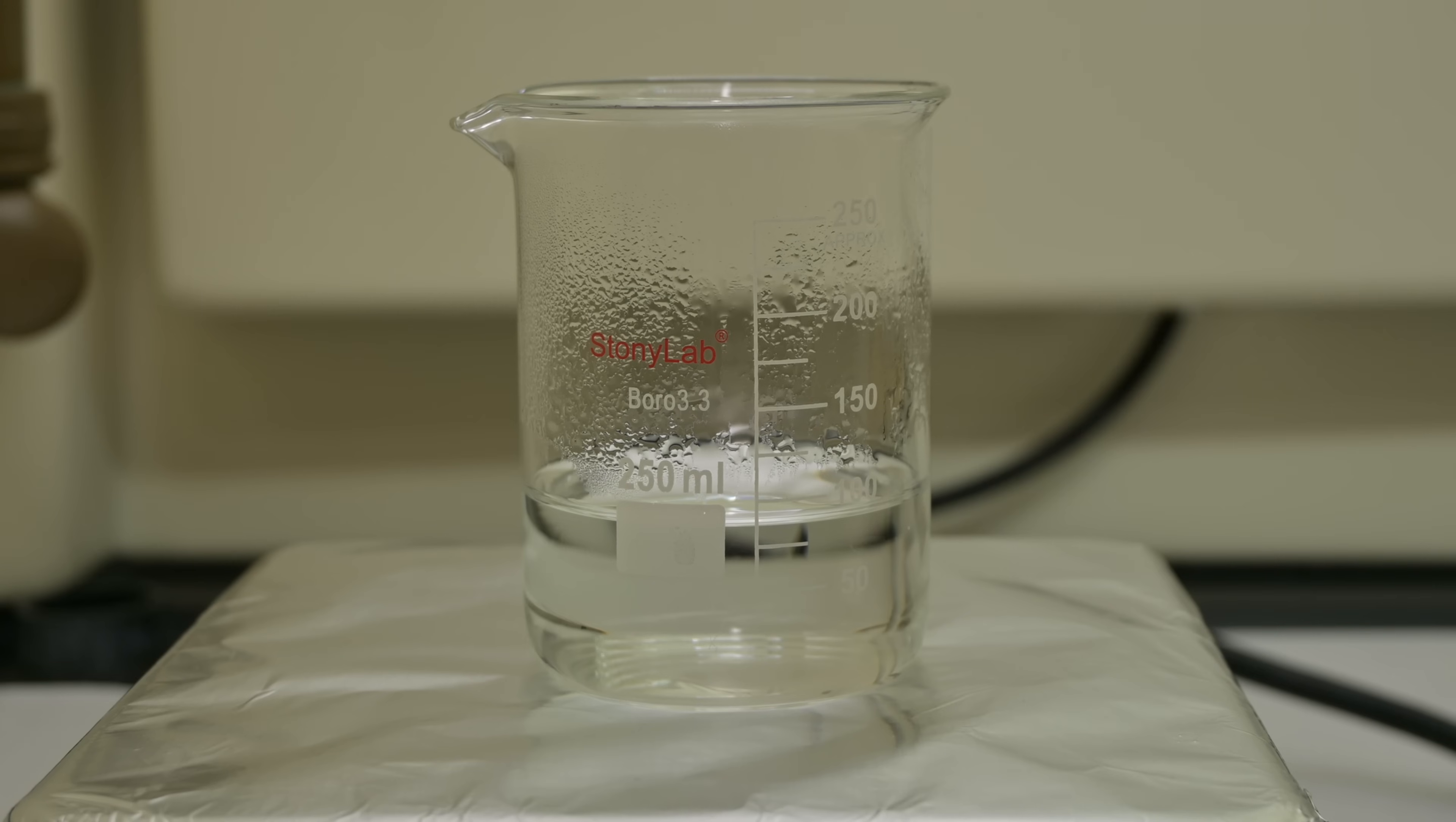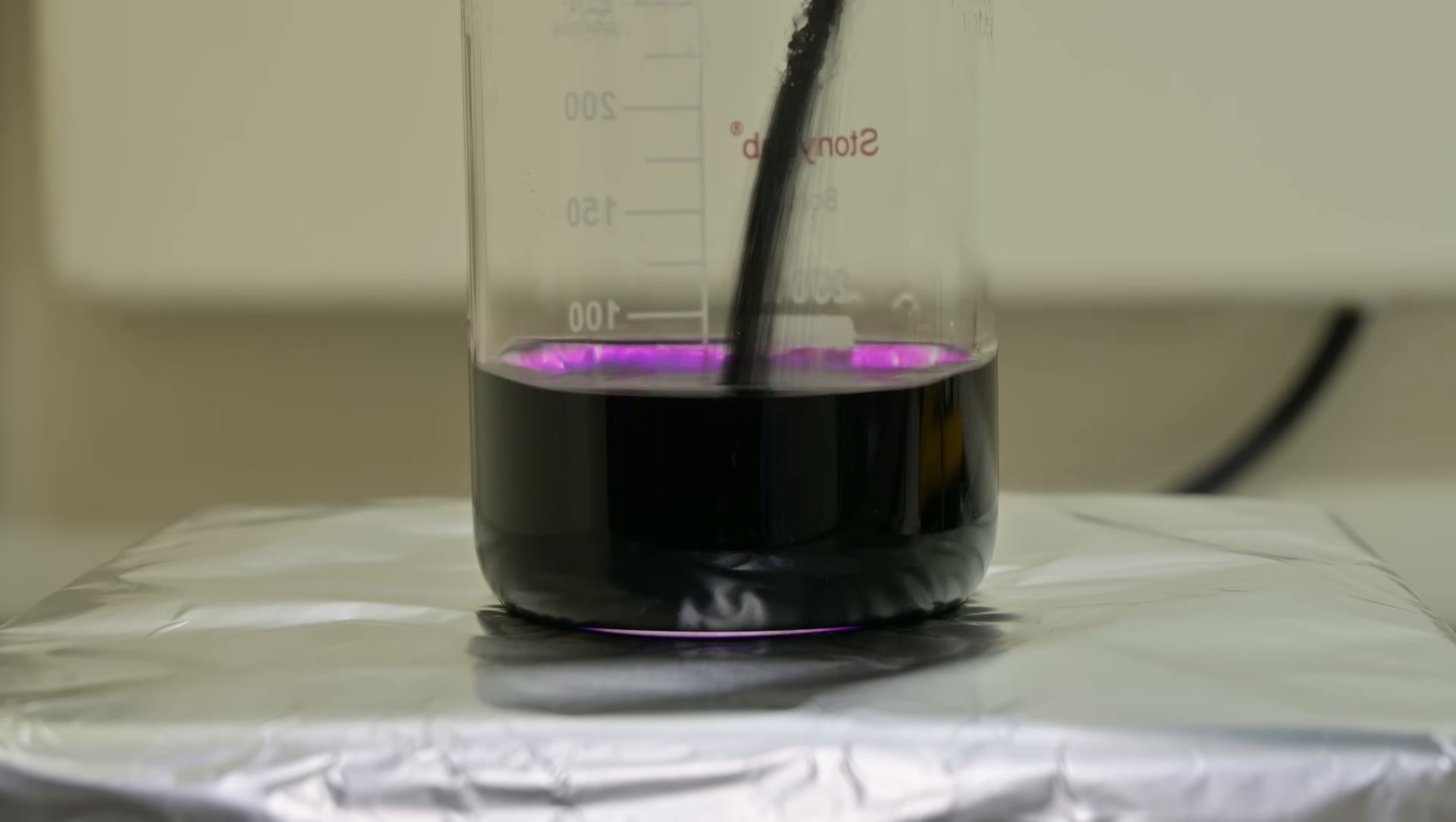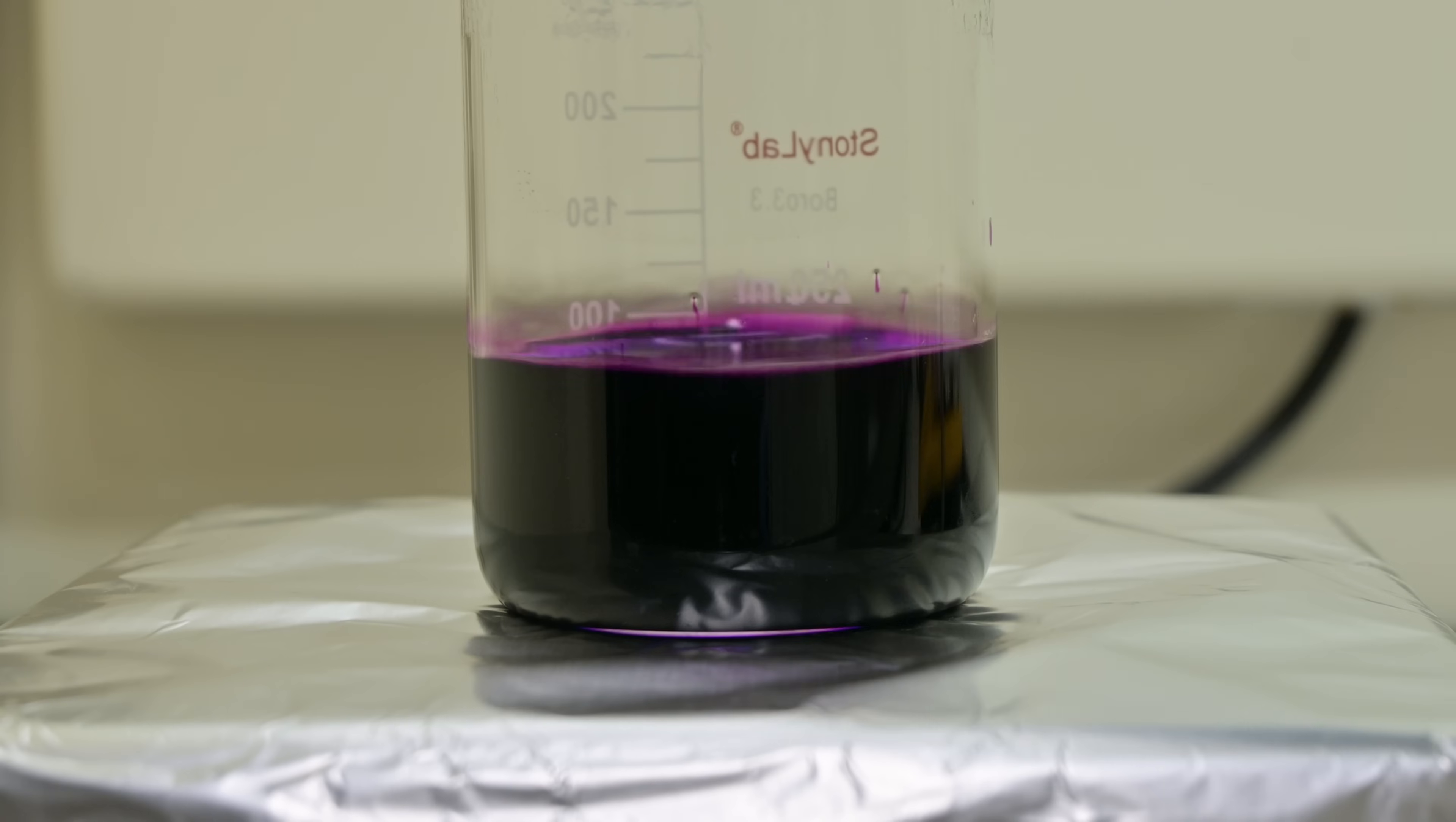While that's warming up, I prepare the oxidizing reagent. In a separate beaker, I dissolve 16.7 grams of potassium permanganate in 100 milliliters of boiling water. Potassium permanganate is a powerful oxidizer and it's going to oxidize the methyl group on the p-acetotoluidide to a carboxylic acid, transforming it into p-acetaminobenzoic acid.